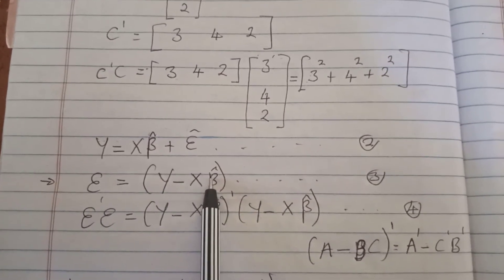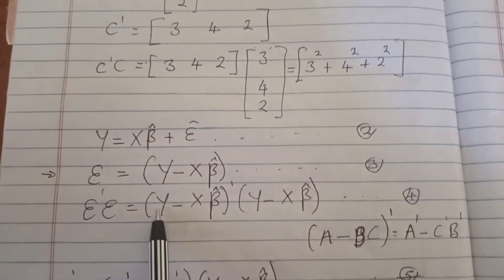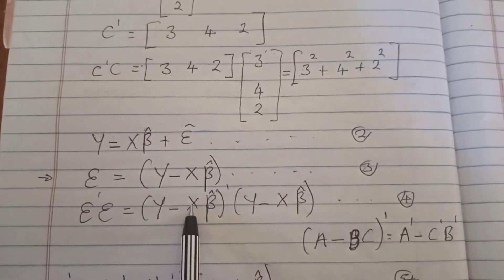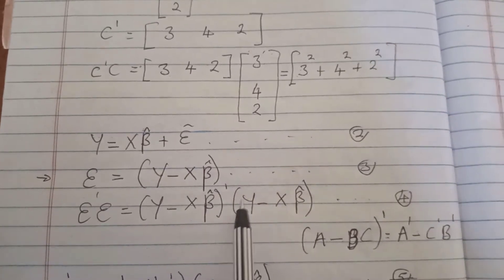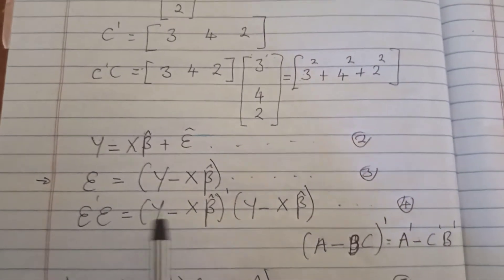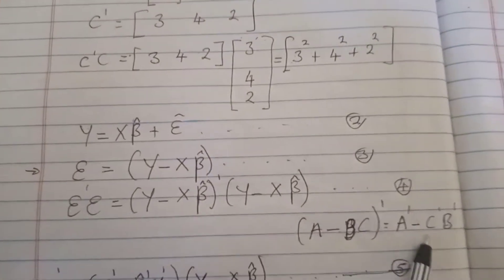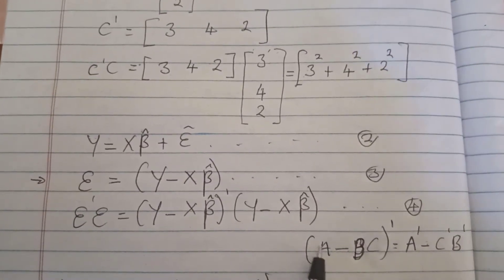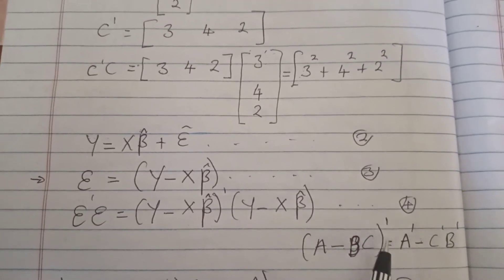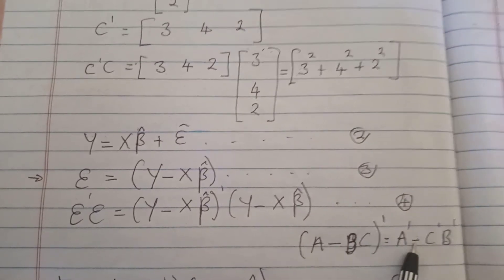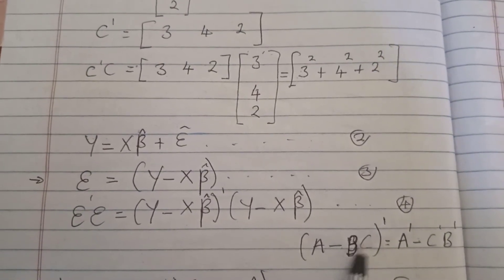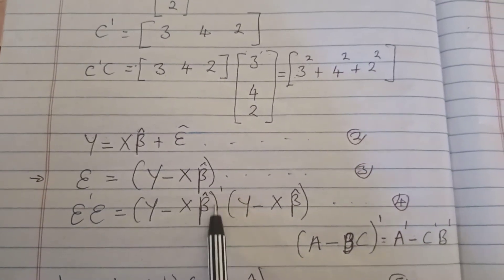When you write epsilon-transpose times epsilon, you substitute to get (y − Xβ)-transpose multiplied by (y − Xβ). Remember this rule when multiplying matrices: the transpose of (a − b·c) equals a-transpose minus c-transpose times b-transpose — these two terms interchange positions. We are going to apply that rule here.